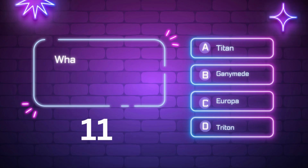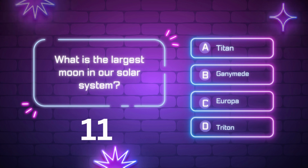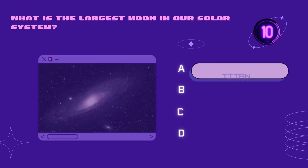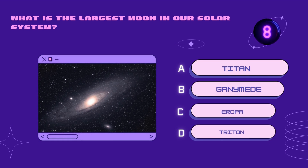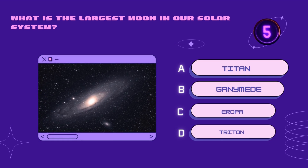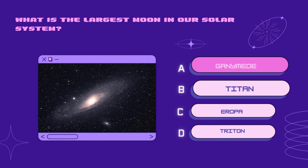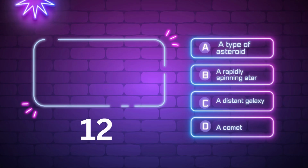What is the largest moon in our solar system? Triton, Ganymede, Europa, Triton. Your time starts now. Right answer is Ganymede.